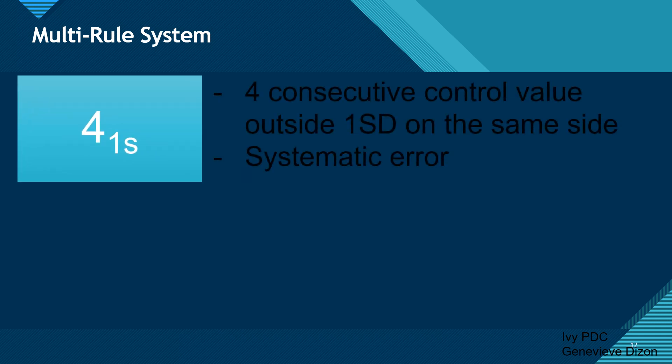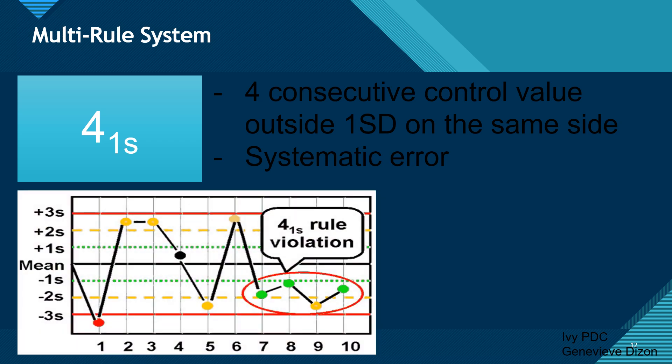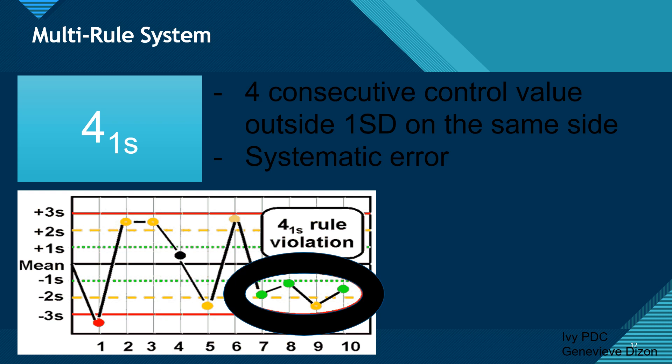The fifth rule is the 4-1-S rule. These are four consecutive control values located outside 1-SD, and they should all be on the same side. This is a form of systematic error. There should be a minimum of four consecutive control values, all under 1-SD, either on the positive side or the negative side. With this systematic error, we also reject.